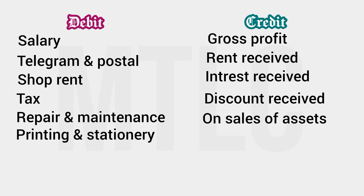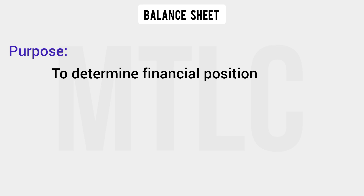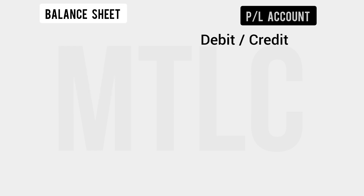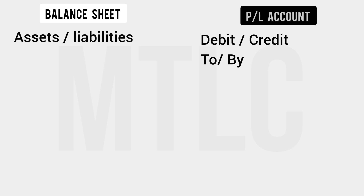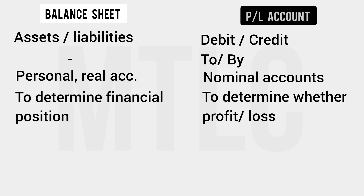In our trading account, we determine the account balance. The left side is the debtor and the right side is the creditor. That gives us the Profit and Loss Account. For the Balance Sheet, we look at our financial position as of the last date of the financial year — what are the liabilities and what are the assets. We record nominal accounts in the Profit and Loss Account, and personal and real accounts are recorded in the Balance Sheet, so we know the company's financial position.